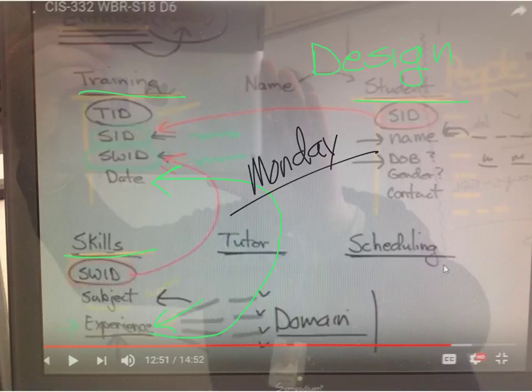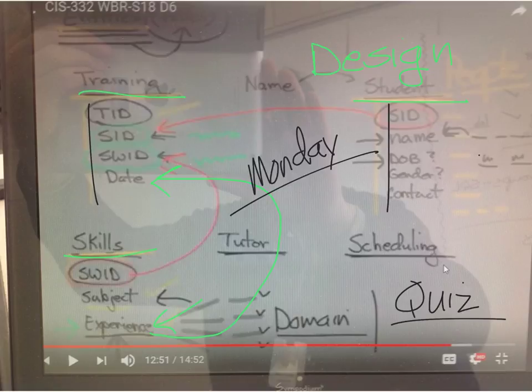As we start talking about relationships between tables, we are going to start talking about constraints on the attributes and relationships. Alright, that is it. The rest of the class period we took the quiz, and the solution is available.